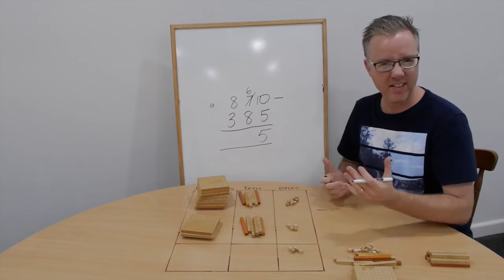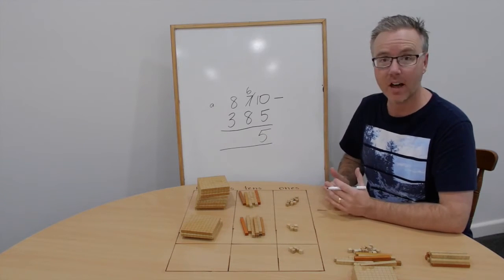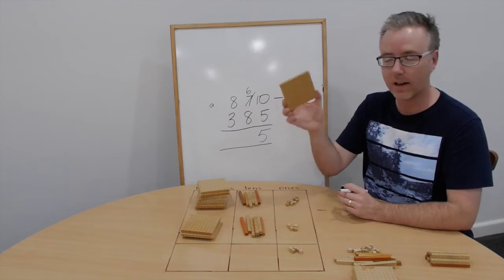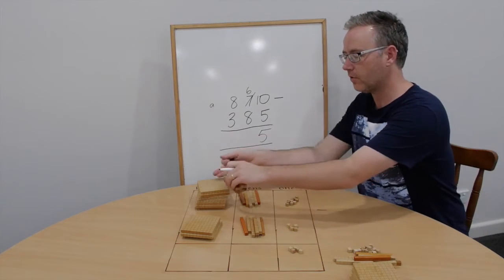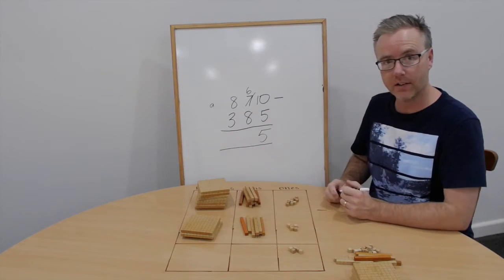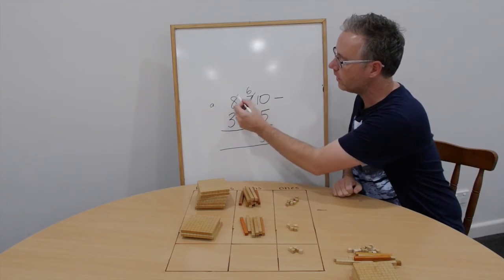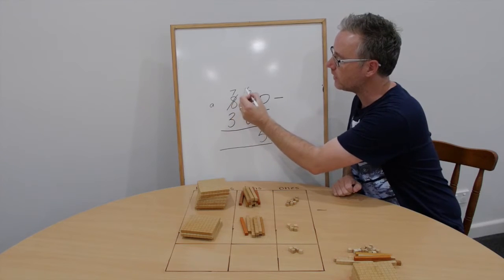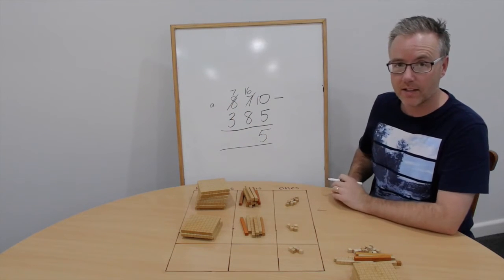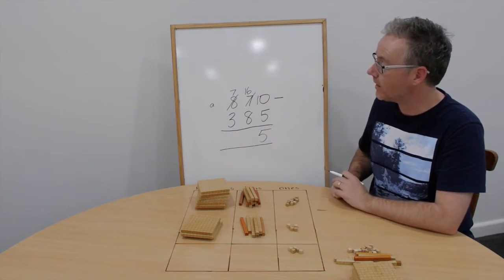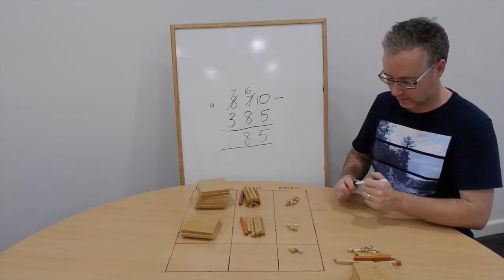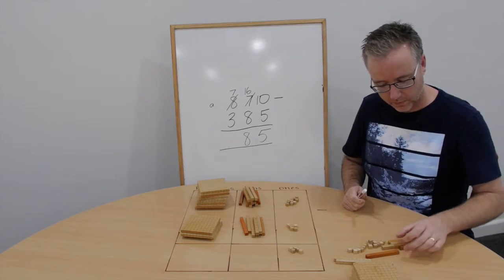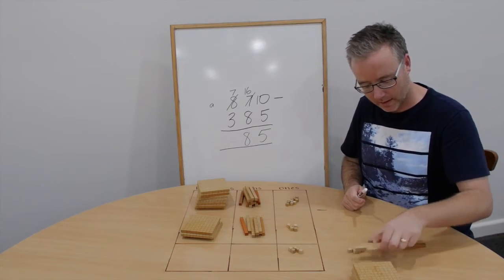6 take away 8. 60 take away 80. Can't do. So let's trade 100 for ten tens, which is also 100. And we'll bring that 100 from the hundreds column to the tens column. We now have 7 hundreds and an extra ten tens. We now have 16 tens take away 8 tens. 8 tens. 4, 8.